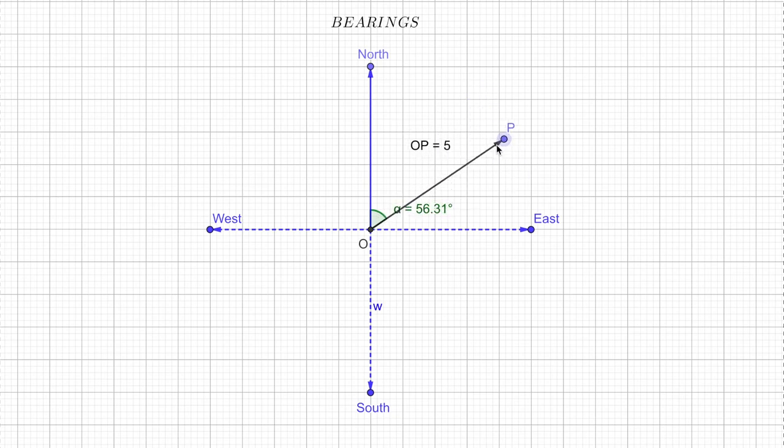As you can see right now the bearing of point P is 56.31 degrees. Actually bearings are represented in three digits. So for example here bearing of point P with respect to O is 056. We usually ignore the decimal part.